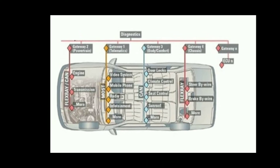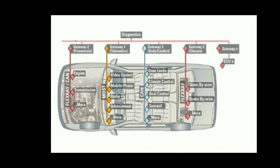Consider this a car. In this car we have a number of systems. From the left, in red, is the powertrain — engine, transmission, and more. The yellow color represents mobile phone, video systems, radio, and infotainment. The blue color is the gateway — door locks, climate control, seat, and sunroof. Then we have steer-by-wire and brake-by-wire.